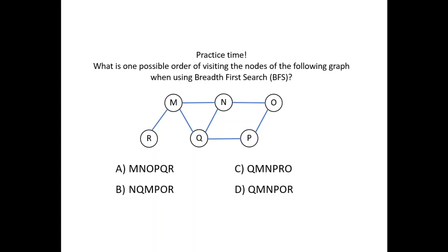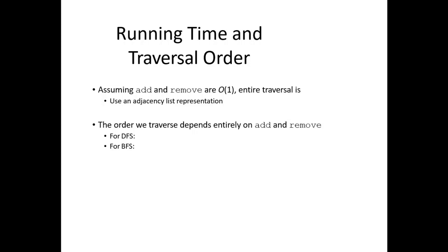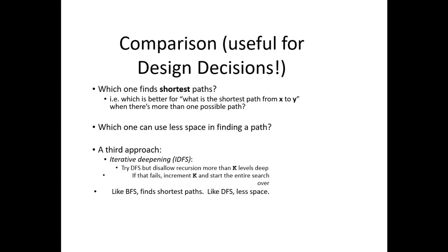You can see we have a question now. What are the possible orders of visiting the nodes? We have mainly four possibilities. Check them if they are correct or not. We have, assuming that the add/remove methods are O(1), graph traversal using an adjacency list takes linear time. The order of vertices depends entirely on the add/remove. DFS and BFS can be used to check the shortest path. Which is the shortest path from X to Y? There can be more than one possible path. Which one uses fewer steps in finding paths? The third approach is iterative deepening depth-first search. We can use DFS or disallow recursion beyond K levels. If that fails, increment K and start the entire search all over again. Like BFS, you can find the shortest path, but DFS uses less space.